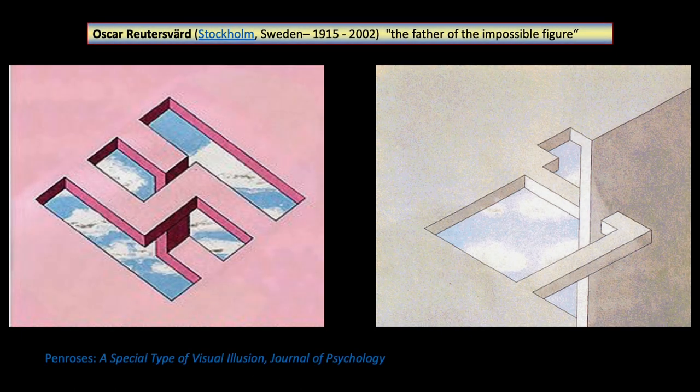Escher's investigations into impossible figures motivated the Penroses to publish impossible objects, a special type of visual illusion in the British Journal of Psychology. Spurred by the article, Escher produced two prints of impossible buildings, which rekindled the interest of the true father of impossible figures, Oscar Reutersvärd, who painted optical illusions.